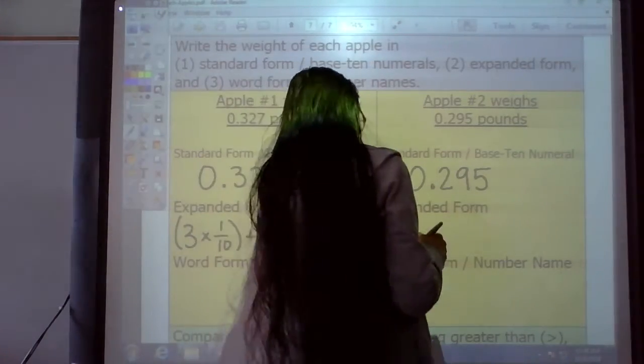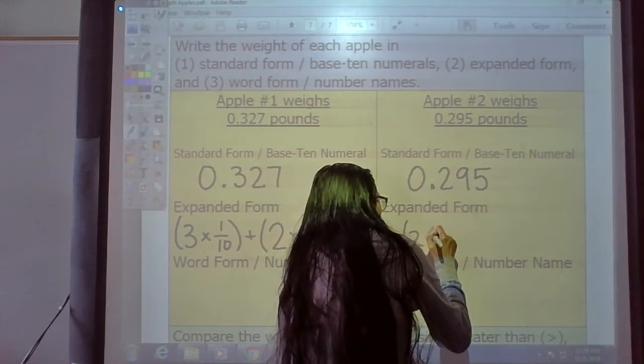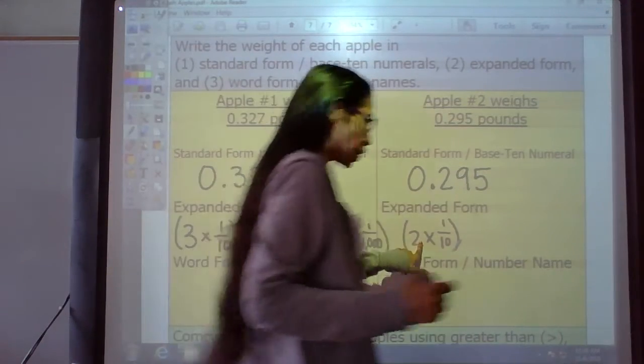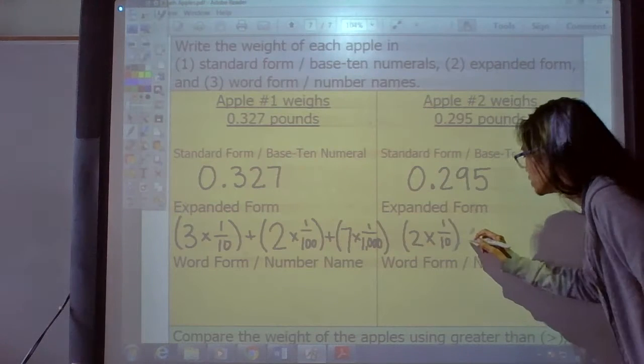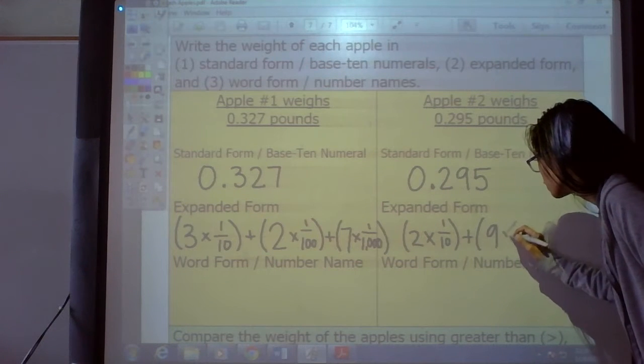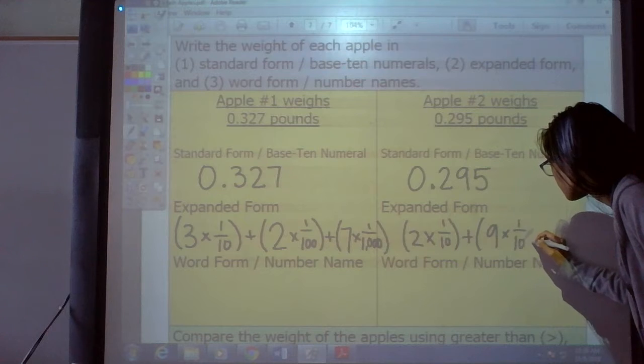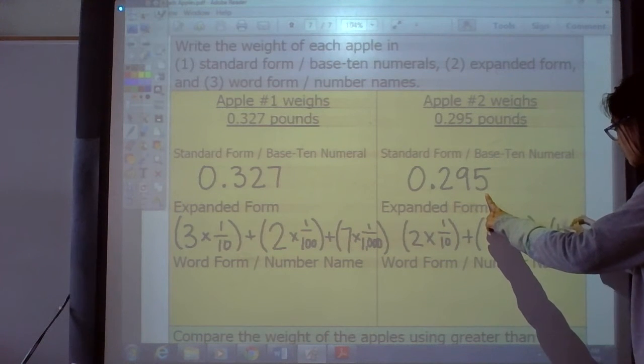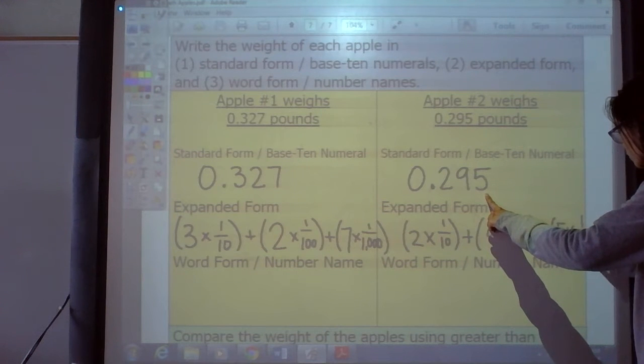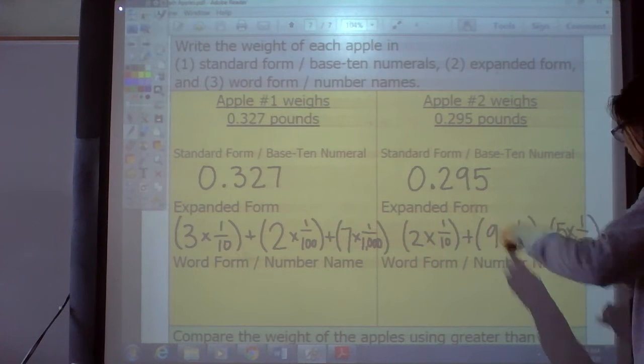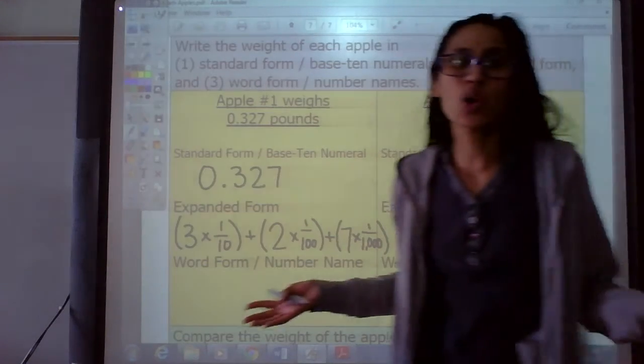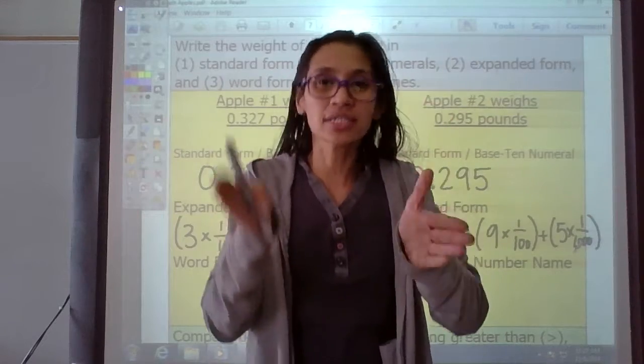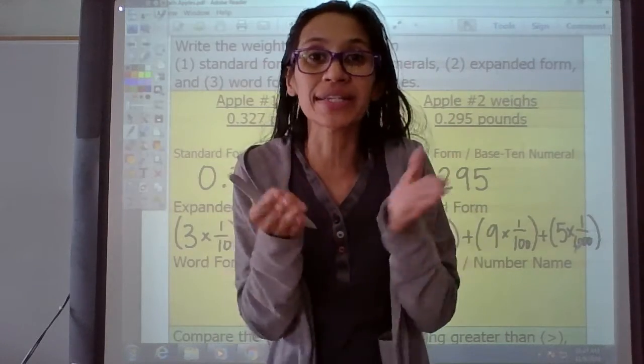We start with that two. So we have two, and what place is that? Tenths place, just like that. Do you see that? All right, let me scoot over here. Then we have the nine, and what place is that in? Hundredths place. And then we have the five, and what place is that in? Thousandths place. We're done with that. So easy. Just go one digit at a time, one digit at a time, and break it down, and break it down. So easy.